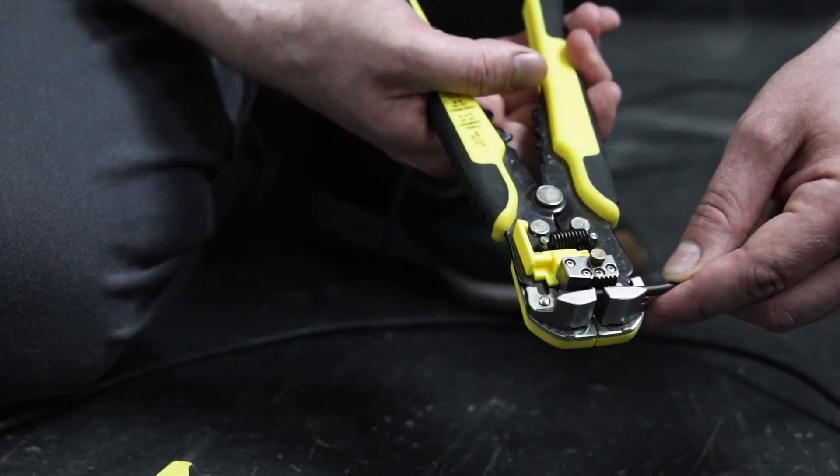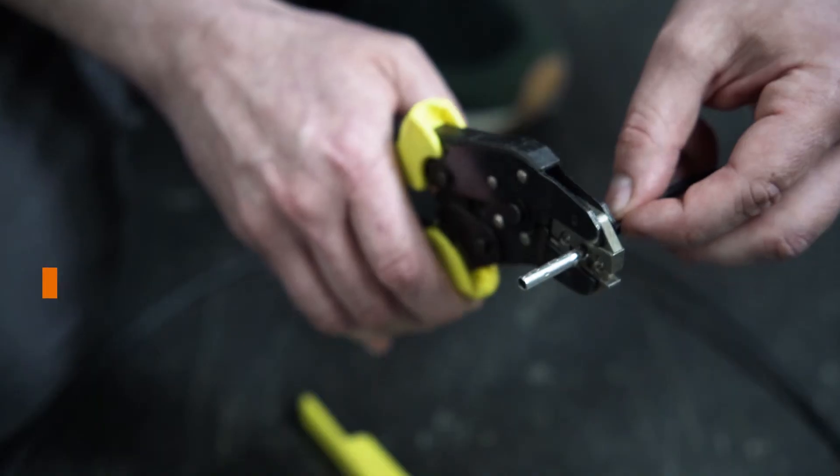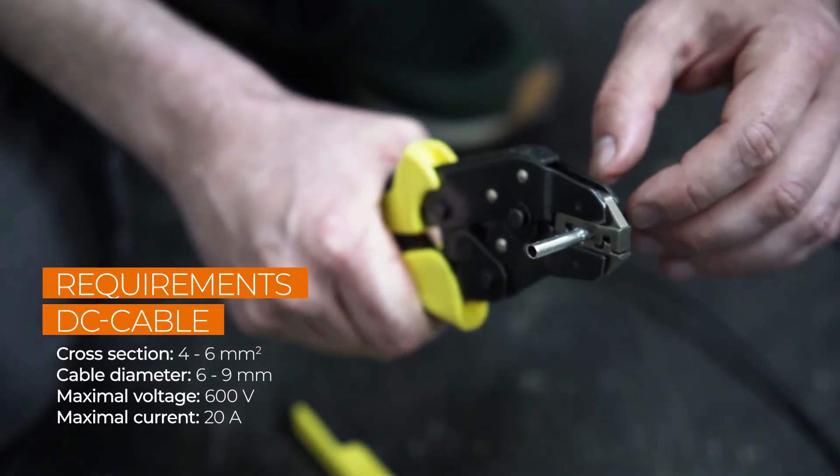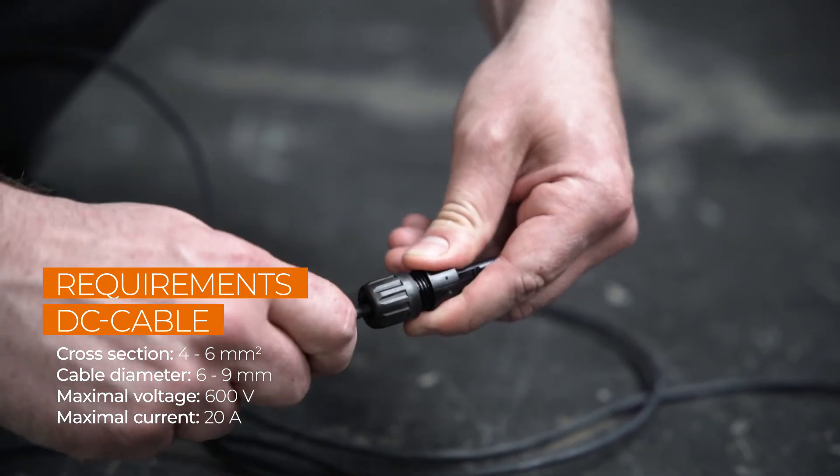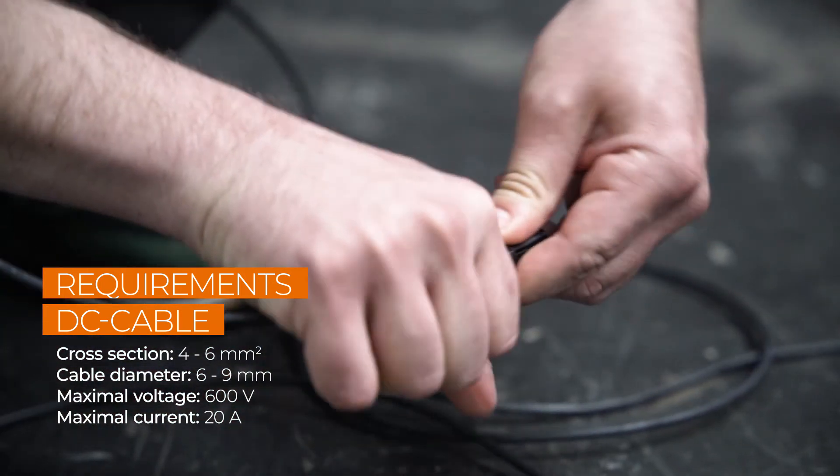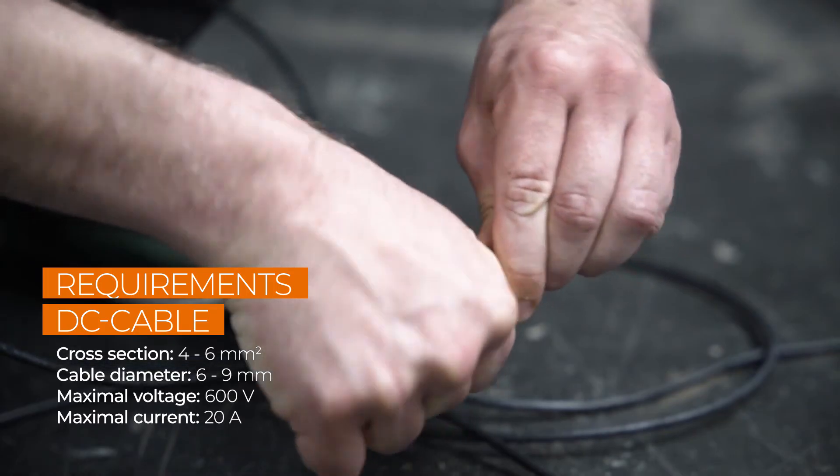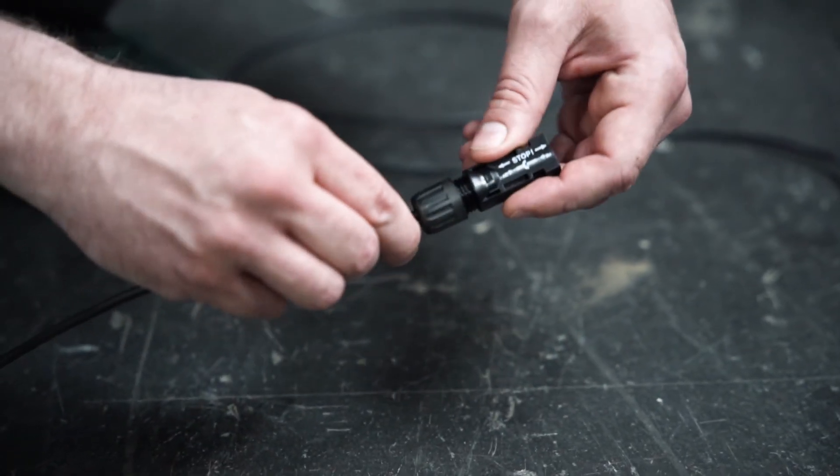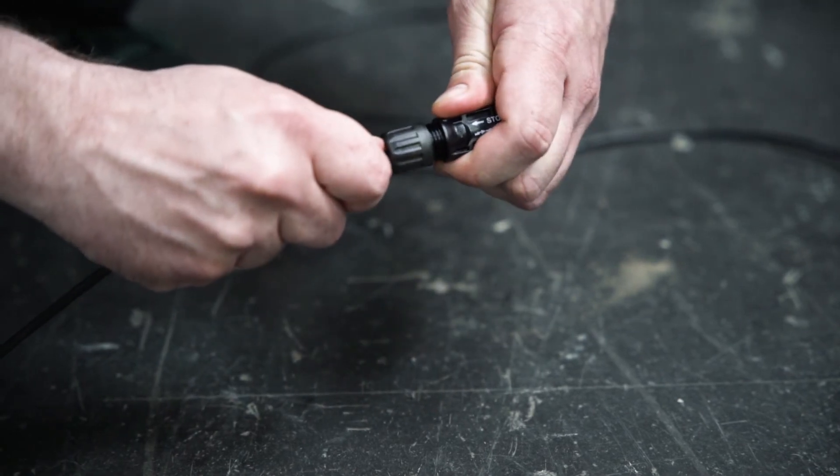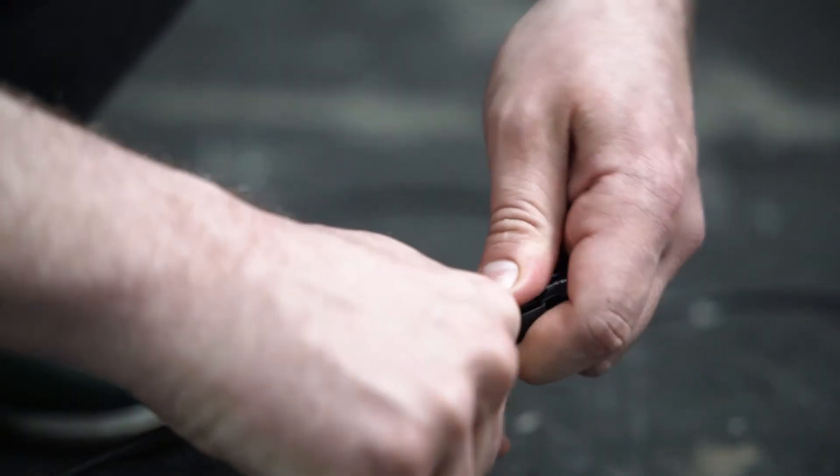Now let's take a look at the DC connector. After stripping the insulation, you have to attach a crimp contact. For this, you have to check the polarity, because each pole has different terminals that need to be crimped. The polarity is marked on the inverter. Then push the cable into the insulating sleeve until it snaps into place. Screw it and that's it.